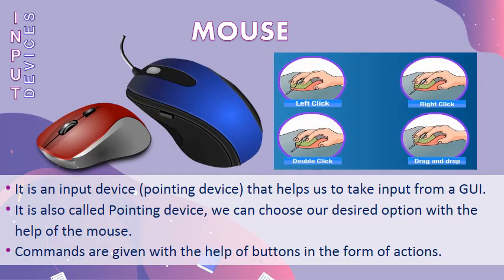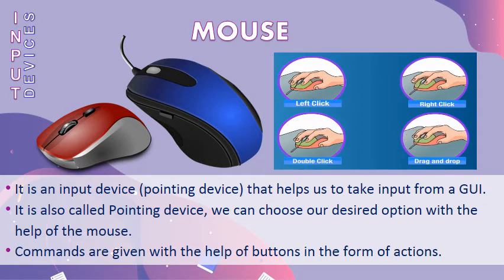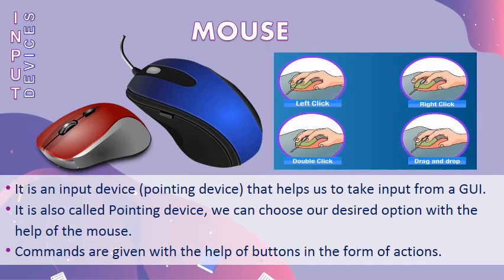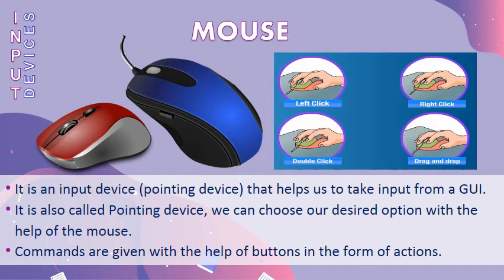If you want to select an item, we choose left click. To open a program or an item, we choose double click. To get more commands on an item, we choose right click. And if you want to move an item from one place to another, we use the action drag and drop.